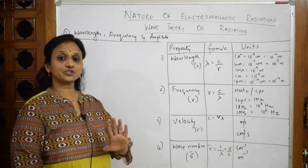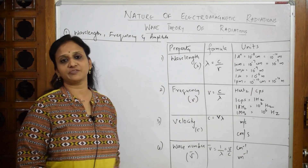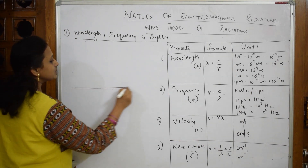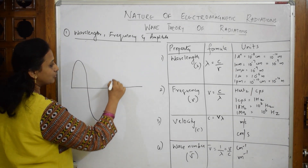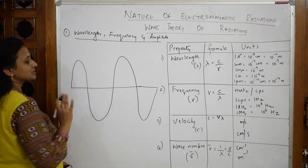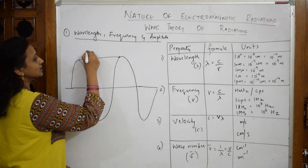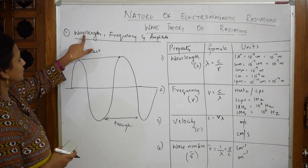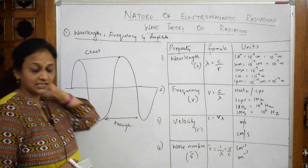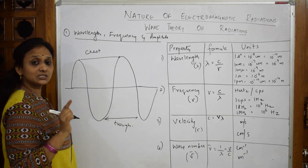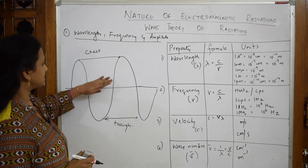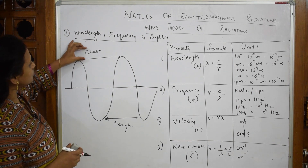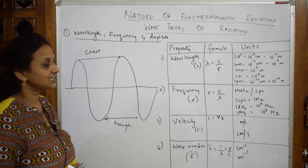Definitions are not so important, but the formulas and units are very important. Looking at the graph: light is a form of energy traveling as an electromagnetic wave. In the wave, this upper part is called the crest and the lower depth is called the trough. Wavelength is denoted by lambda, and it is the distance between consecutive crest and trough — the peak and the depth.